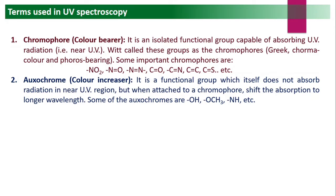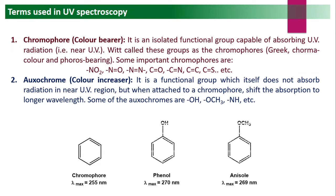These auxochrome groups do not absorb radiations in the near UV region, but if attached to a chromophore they shift absorption towards longer wavelength — the lambda max increases. For example, benzene is a chromophore with six pi electrons that absorbs at 255 nm. When benzene is substituted with OH to form phenol, the lambda max increases from 255 to 270 nm.